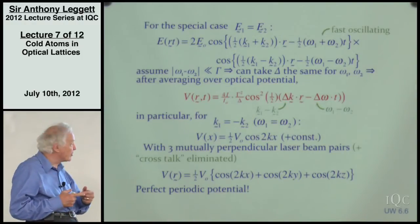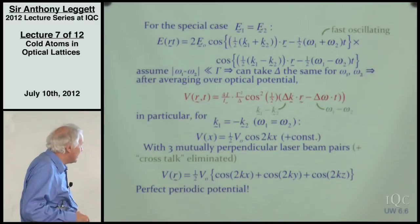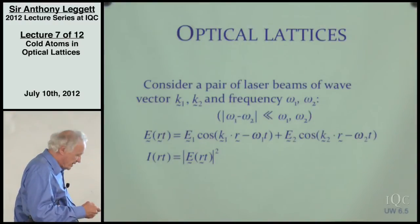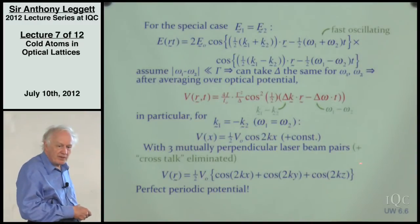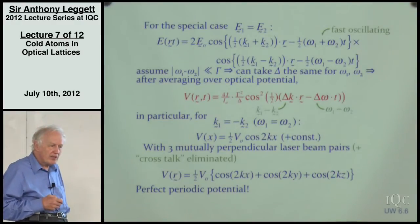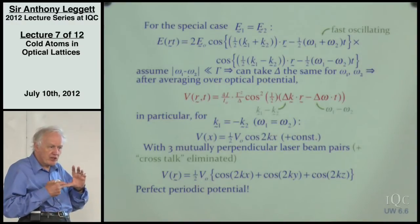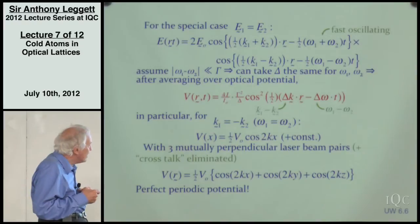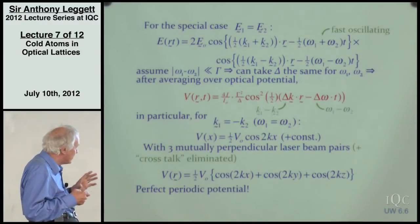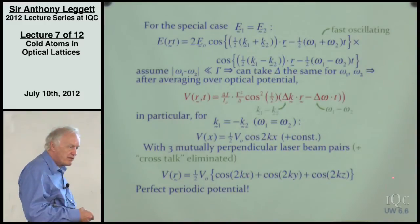There's no reason to stick to just one pair of counter-propagating beams; you can use three mutually counter-propagating beams and get a nice, perfect three-dimensional periodic potential. If you red-detune your laser—tuning so the laser frequency is slightly less than the real atomic transition frequency—you get an attractive potential. If you tune the opposite way, you get a repulsive one. Either way, you can create an essentially perfect lattice.